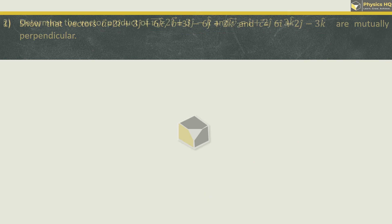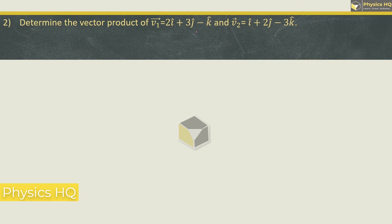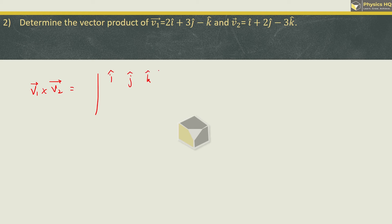Next sum: Determine the vector product of v1 and v2. Vector product means cross product, so we find v1 cross v2 using the determinant method. The first row will be i, j and k. Next row will be components of v1 which is 2, 3 and minus 1. Third row will be components of v2: 1, 2 and minus 3.